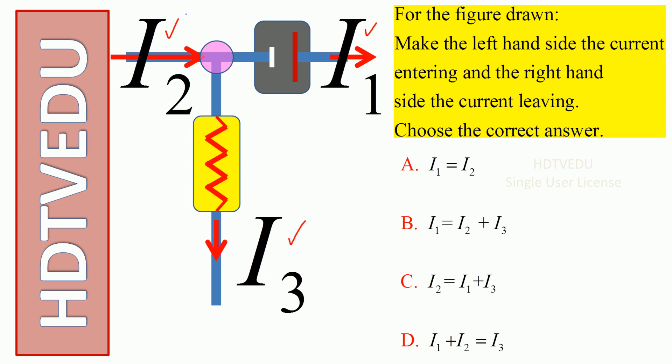With respect to this point, I2 is entering and I3 and I1 are leaving. If you make the left hand side the current entering and the right hand side the current leaving, what is the correct choice?